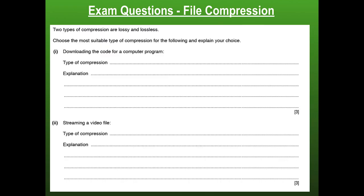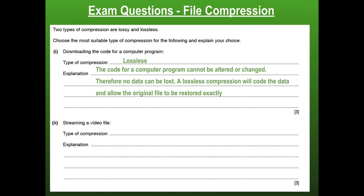Main types of compression: we have lossy and we have lossless. We're going to choose the most suitable type and explain the choice. First, downloading the code for a computer program — a computer program needs to be exact; you can't delete code. Missing one semicolon will cause problems. So we do not want to lose any data — it must be lossless compression. The code for the computer program cannot be altered or changed, therefore we need a method where data cannot be lost. One mark for identifying lossless, one for the scenario context, and one for explaining that lossless compression allows the file to be restored exactly with no loss.